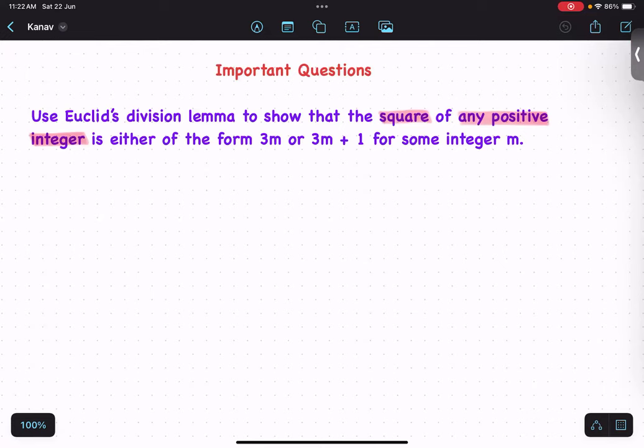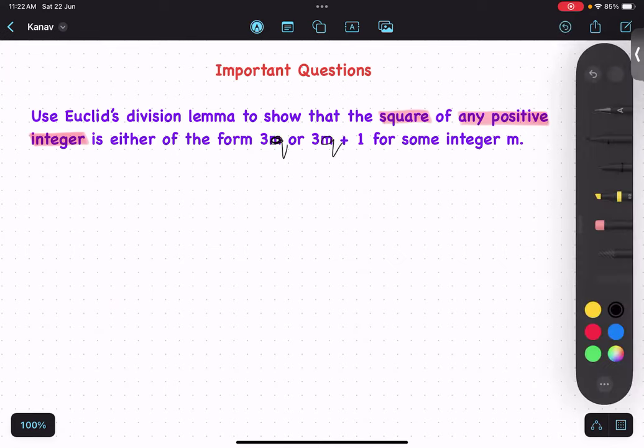Is either of the form 3M, 3M plus 1. So when the question is talking about M, please do not take your variable as M. Let's say they say this as Q, so please do not start the question with Q. Start with some other variable. That's what I am trying to say. Is that thing clear?